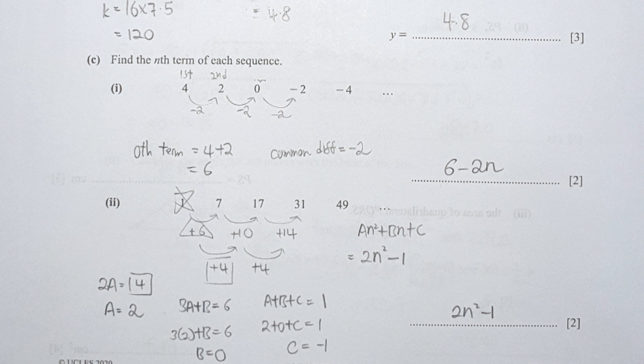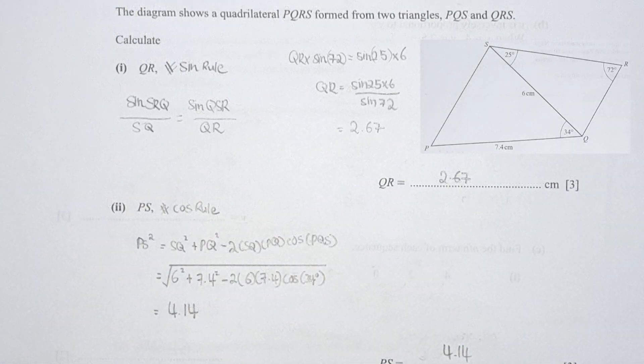For question 8a, finding QR: looking at it, I know I have to use the sine rule. So sin(SQR) over SQ equals sin(QSR) over QR. I substituted all the information from the graph, so QR equals sin(25°) times 6 divided by sin(72°). The final answer is 2.67.